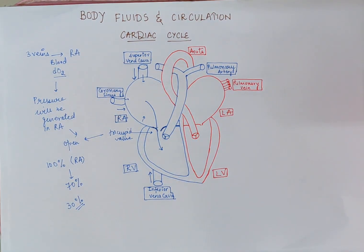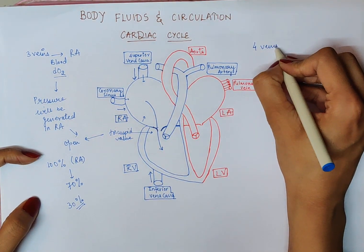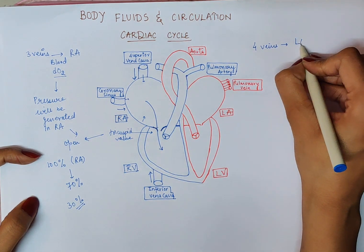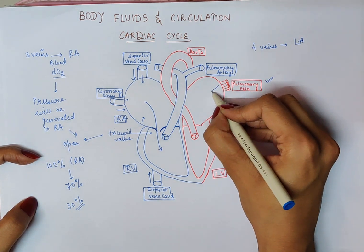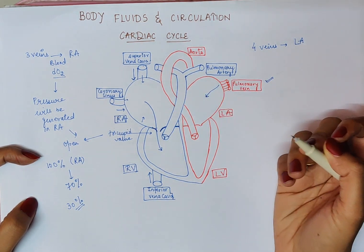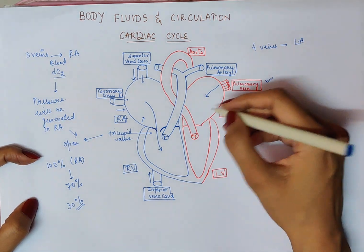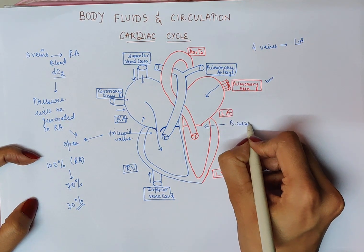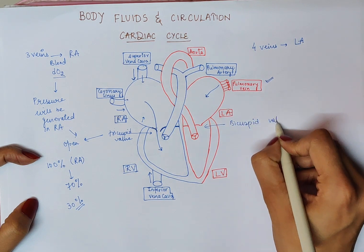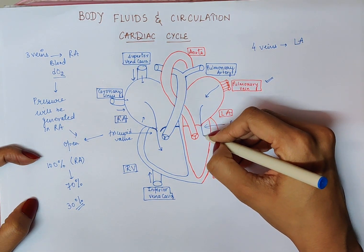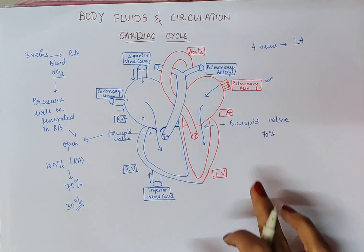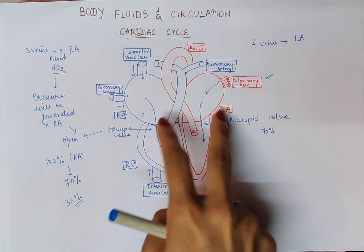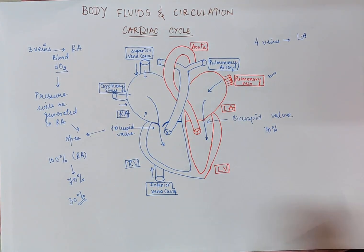On the left side, the same condition occurs. Instead of three veins, four pulmonary veins bring blood to the left atrium. This generates pressure, causing the bicuspid valve to open, and blood flows into the left ventricle. Here also, only 70% of the blood enters the left ventricle. Both sides occur simultaneously.